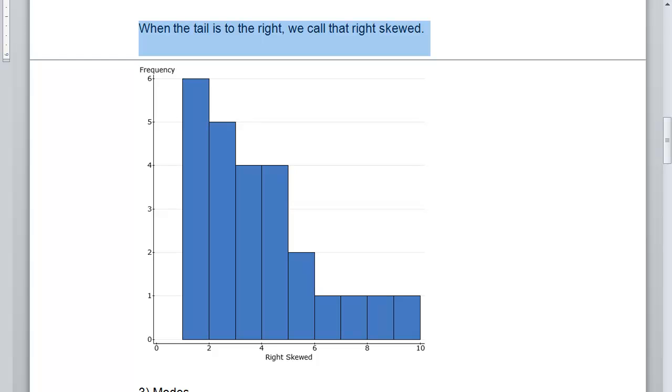And so here, you can see, here's my mode, and this is very clearly all of the data is dragged off toward the right. And so this tail is in the right direction, and so this is a right skewed distribution right here.